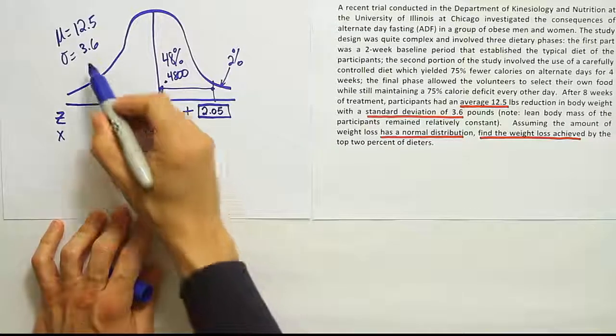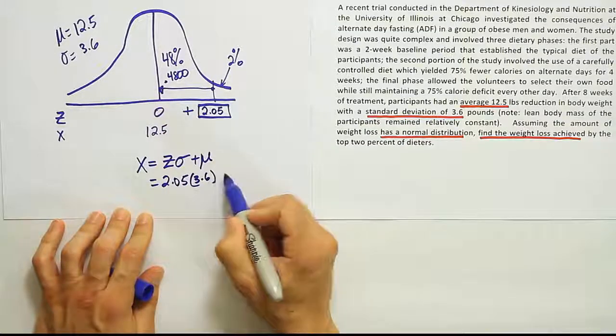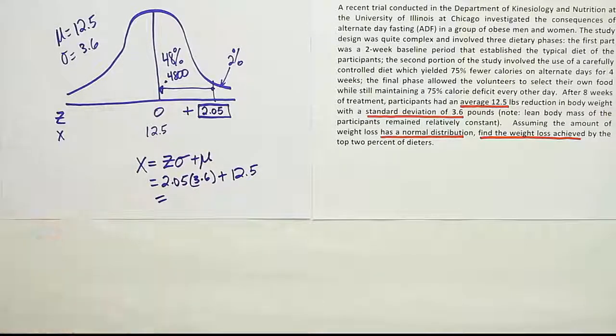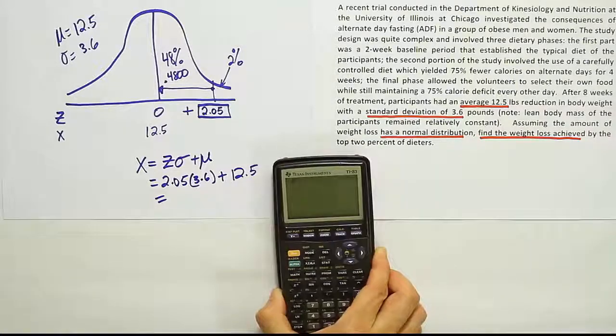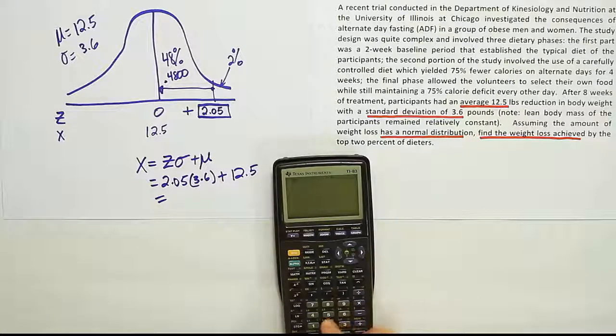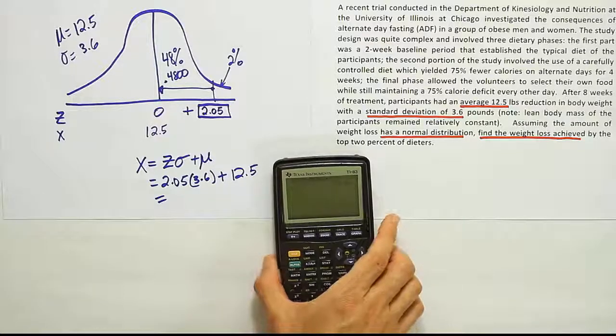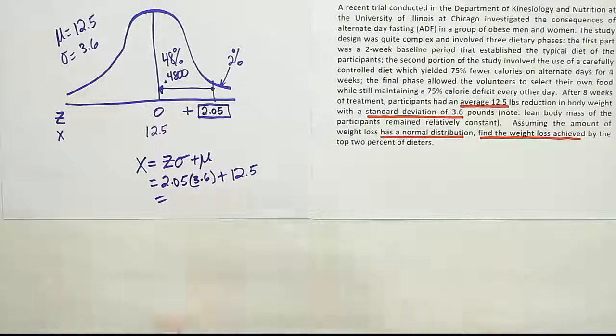I multiply by that standard deviation, 3.6, and I add to that the mean of 12.5. And when I'm done with that, I have my solution. Let's see what all that turns out to be. So we have 2.05 times 3.6 plus 12.5. And when I finish, I get the result 19.88.